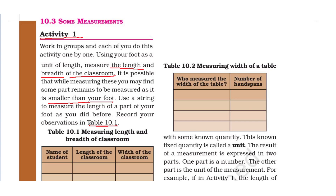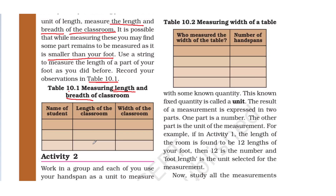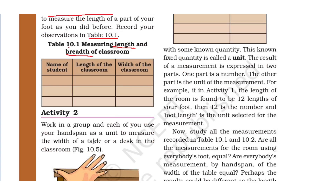In Table 10.1, you need to measure the length and breadth of the classroom, taking measurements from different students one by one. The table has three columns: the first column is the name of the student, the second column is the length of the classroom measured using that student's foot, and the third is the width. Fill in the table with measurements from different students.